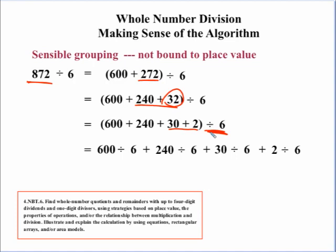So, now, using our distributive property, we take this one division by 6 and split it up into separate operations. So, we have 600 divided by 6. How many 6s can I get out of 600? Plus 240 divided by 6, plus 30 divided by 6, plus 2 divided by 6. Well, we have 100 groups of 6. Here, we can get 40 groups of 6. Here, we can get 5 more groups of 6.